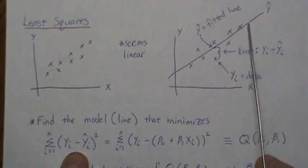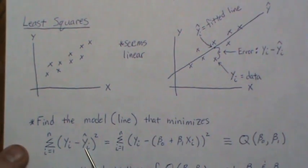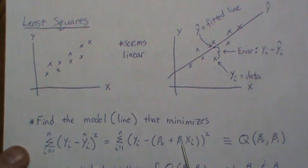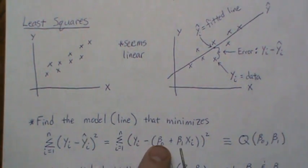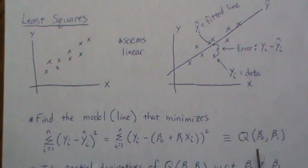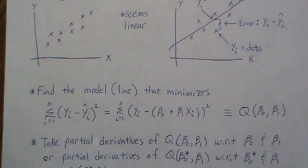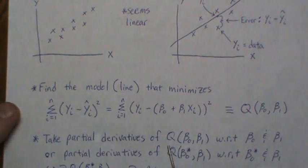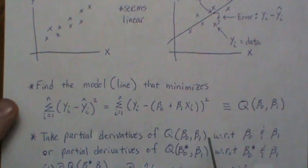Formally, we minimize Q(beta-0, beta-1) = sum of (y_i - beta-0 - beta-1 x_i)^2. This is a function of beta-0 and beta-1, with everything else fixed. We minimize by taking partial derivatives with respect to beta-0 and beta-1.